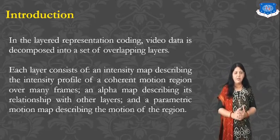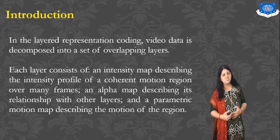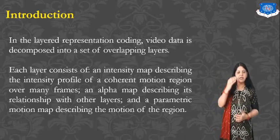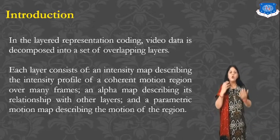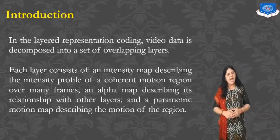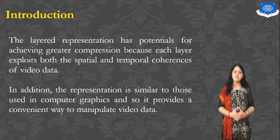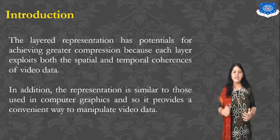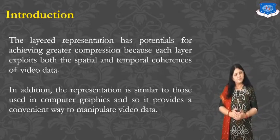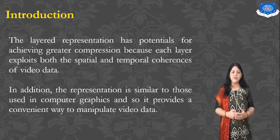In the layer representation of coding, video data is decomposed into a set of overlapping layers. Each layer consists of an intensity map describing the intensity profile of a particular motion region, an alpha map describing its relationship with other layers, and a parametric motion map describing the motion of the region. The layer representation has potential for achieving greater compression because each layer exploits both spatial and temporal coherence of the video data. In addition, the representation is similar to those used in video graphics, and provides a convenient way to manipulate video data.